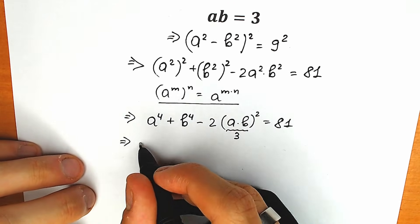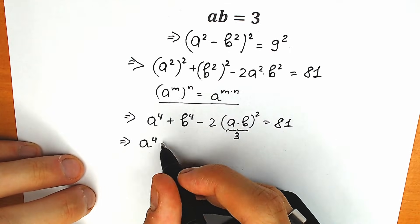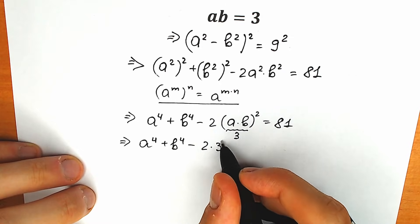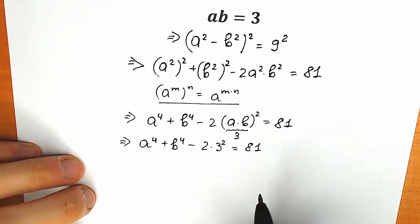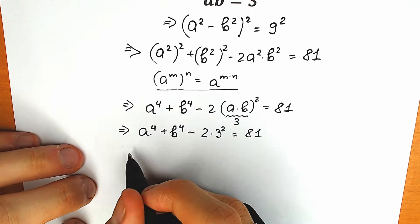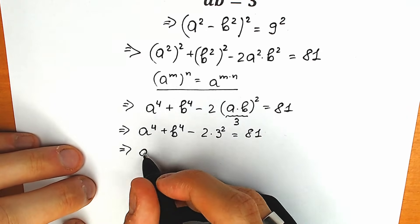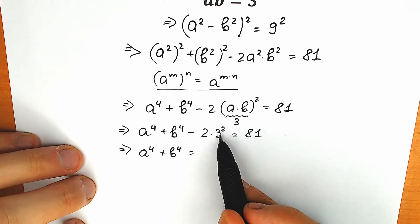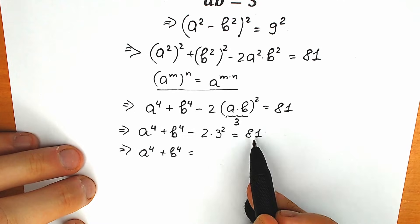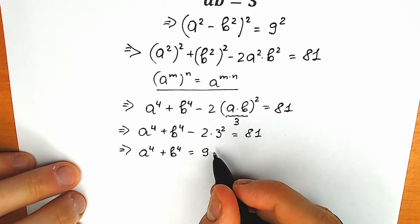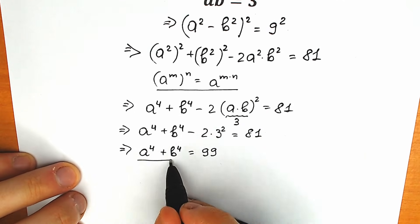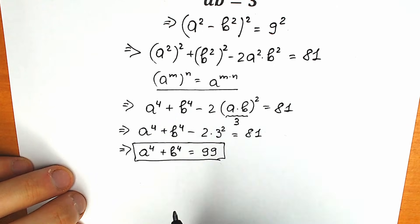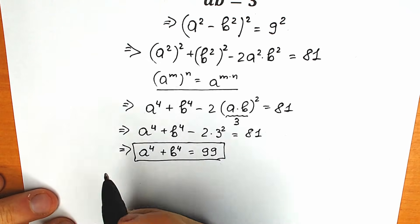Let's do this right now. We have a to the fourth plus b to the fourth minus 2 times (a times b), so times 3 squared, equal to 81. So right now, let's find a to the fourth plus b to the fourth. As a result: a to the fourth plus b to the fourth equals 3 squared is 9, times 2 is 18, so 18 plus 81 equals 99. So a to the fourth plus b to the fourth equals 99. This is our first step.